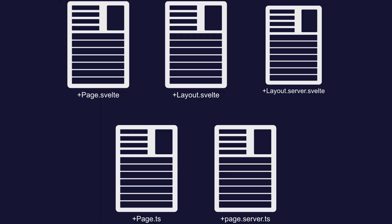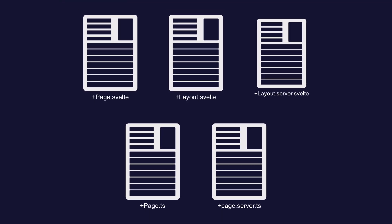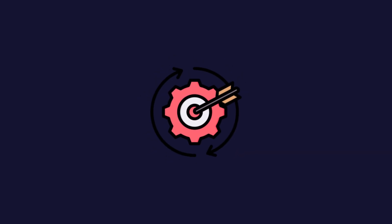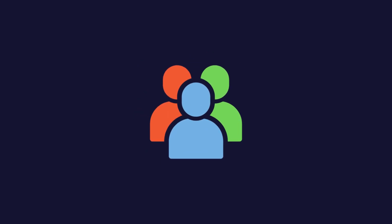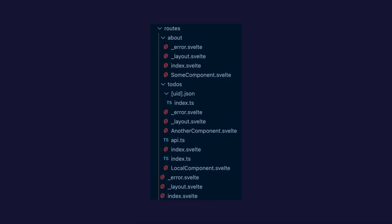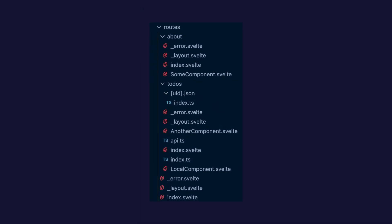In this comprehensive exploration of SvelteKit page types, we've covered the four main file types that make up the foundation of every SvelteKit application. The page.svelte files handle your user interface and client-side interactivity. Layout.svelte files provide shared layouts across your application. Page.server.ts files manage server-side operations and security. And page.ts files enable universal data loading that works on both server and client. Remember to use server-side loading for sensitive operations, universal loading for public data that benefits from smooth navigation, and always organize your files in a way that reflects your application structure.